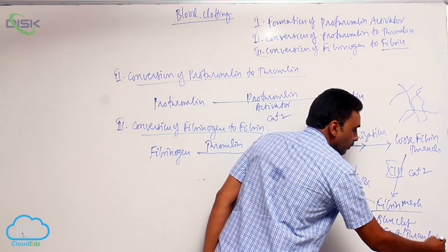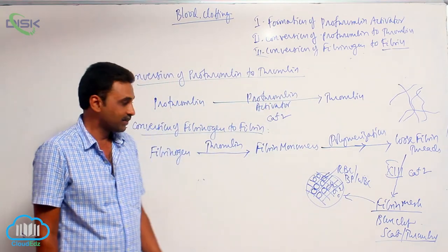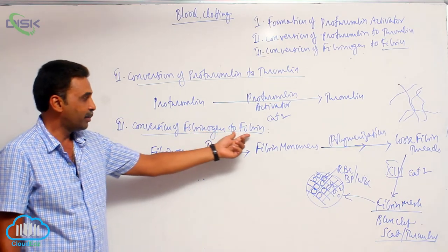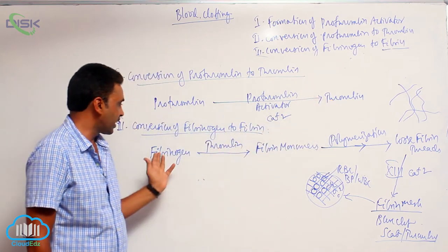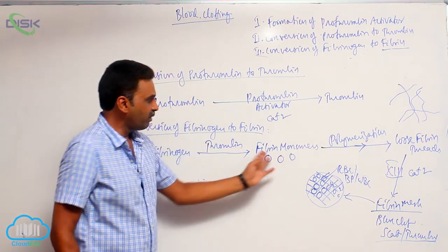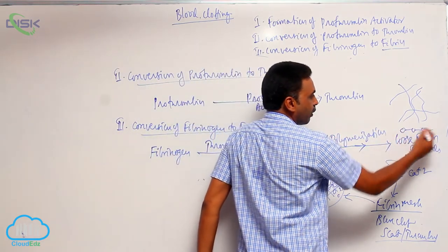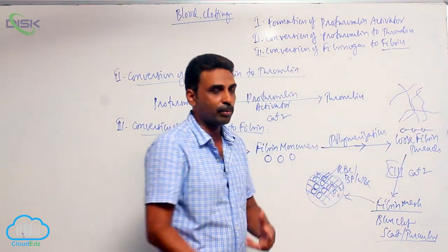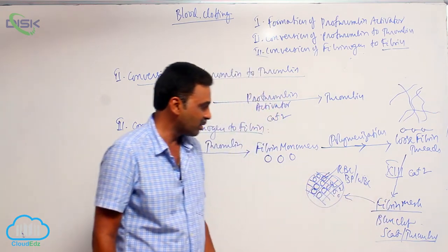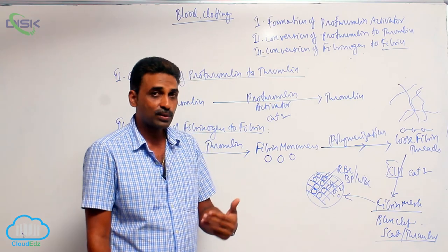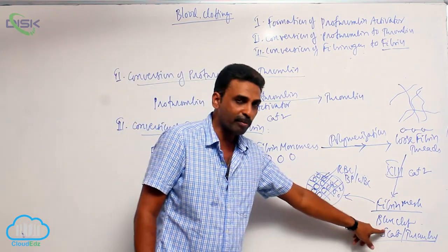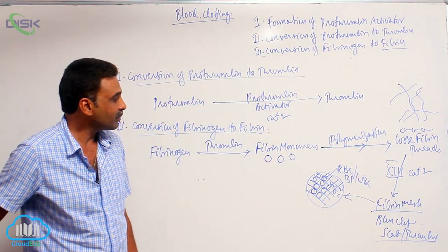So the fibrin mesh itself is the blood clot. The blood clot is also called a scab or thrombus. To summarize step three: fibrinogen is inactive, thrombin converts it to active fibrin (fibrin monomers), which undergo polymerization to form loosely packed threads held by hydrogen bonds. Under the influence of fibrin stabilizing factor and calcium ions they become dense, gaps are filled with red blood cells, white blood cells, and platelets, and the mesh is completely closed — the blood clot, also called scab or thrombus.